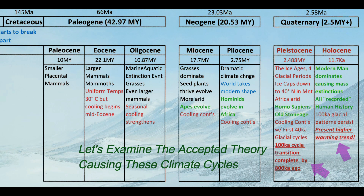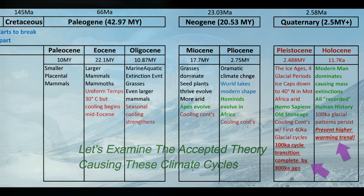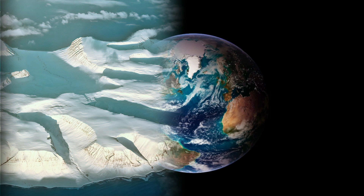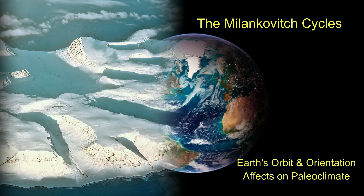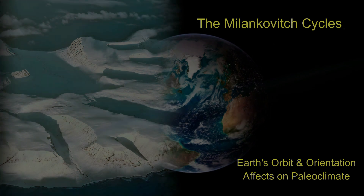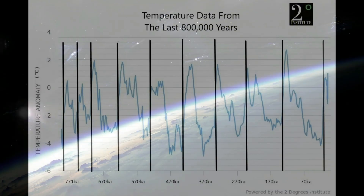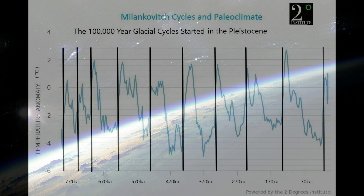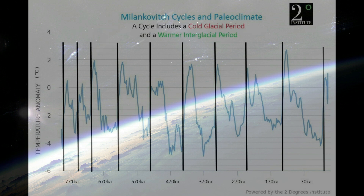Let's examine the accepted theory causing these climate cycles. The current accepted theory is called the Milankovitch cycles — our Earth's orbit and orientation effects on paleoclimate. Using temperature data from the last 800,000 years, I've sectioned up the glacial cycles into approximately 100,000-year intervals. It appears things are starting to settle into these cycles around 720,000 years ago. A cycle includes a cold glacial period and a warmer interglacial period, and there may be more than one interglacial period in the same glacial cycle.